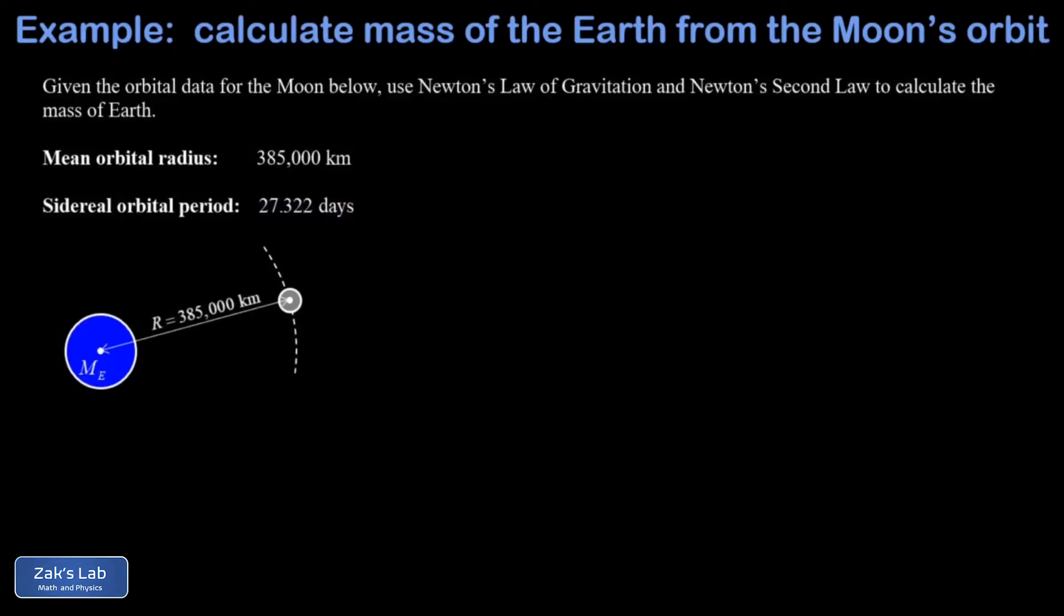We're asked to use this orbital data together with Newton's law of gravitation and Newton's second law to calculate the mass of the Earth. Now this is a classic astronomy calculation. Anytime you observe a satellite going around a large body, you can approximate the mass of that large body without even knowing the mass of the satellite itself.